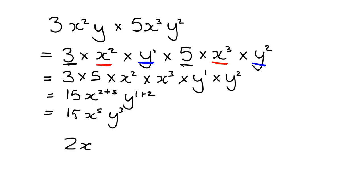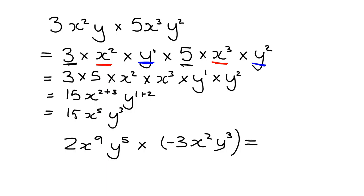Let's try 2x to the 9, y to the 5, multiplied by negative 3x squared y cubed. First, look at the numbers: 2 multiplied by negative 3 gives negative 6. Then look at the x's: I've got 9 of them here and another 2 here, so 9 plus 2 gives 11. Then look at the y's: 5 y's multiplied together here, and another 3 there, so 5 plus 3 gives 8 in total. The answer is negative 6x to the 11, y to the 8.